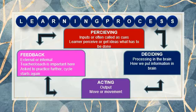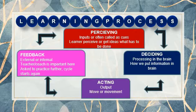Learning has four stages: perceiving, deciding, acting, and feedback. Perceiving refers to the inputs — often called cues — that a learner perceives. The learner has to understand what needs to be done and how to perceive information and experience. Direct experiences affect conceptualization. A learner perceives something new through different senses and uses cognitive ability to identify and learn new things.